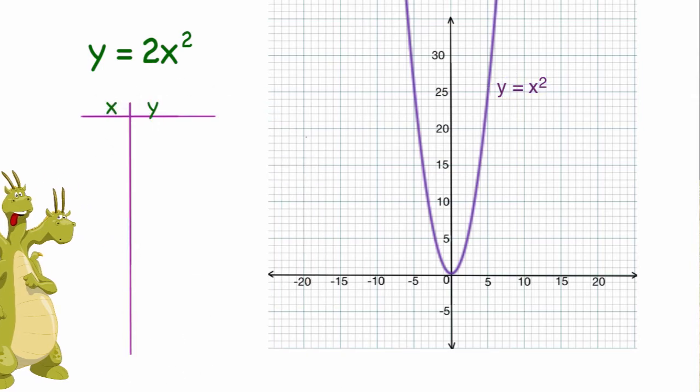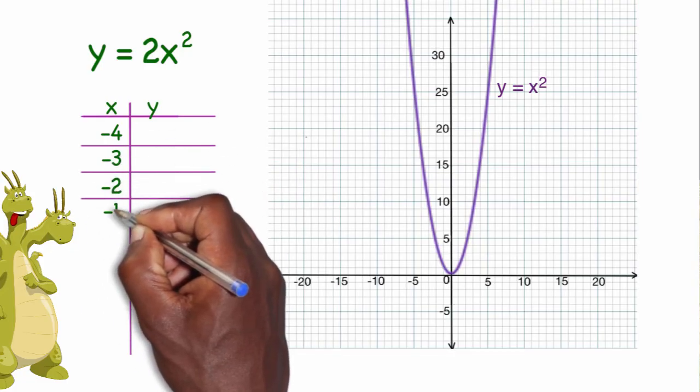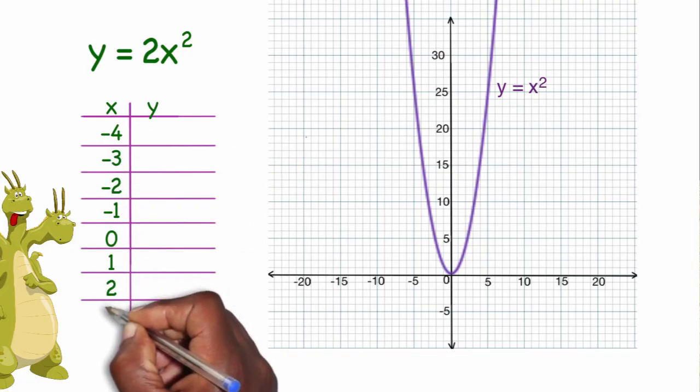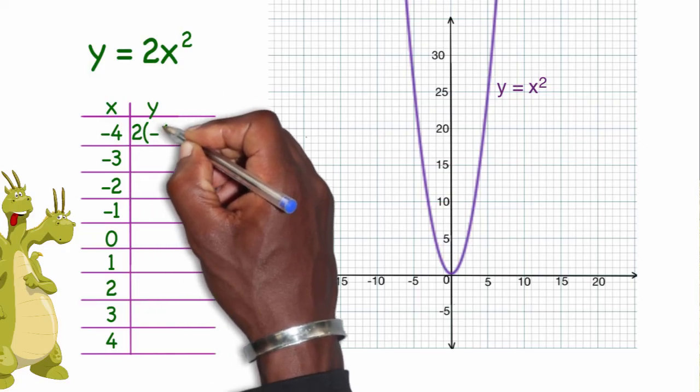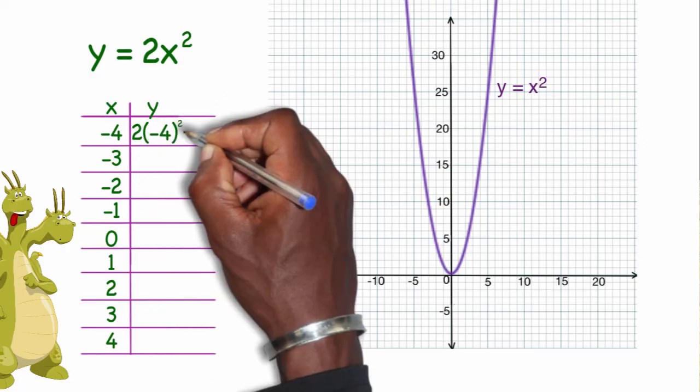We're going to keep the same x values. So we're going to have x values from negative 4 up to 4. And we're going to see what that graph looks like. I'll plug in negative 4 to my formula. 2 times, parentheses, negative 4 to the second power.